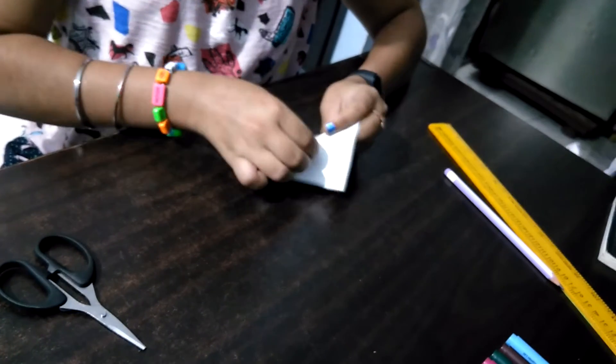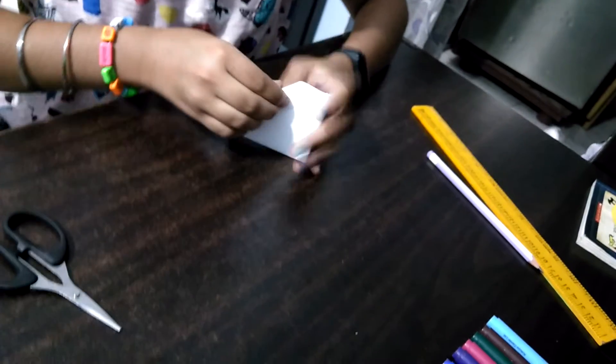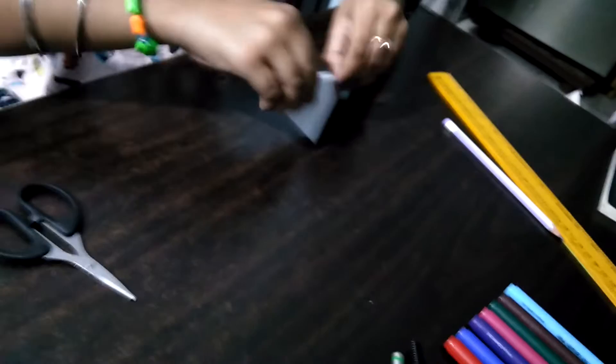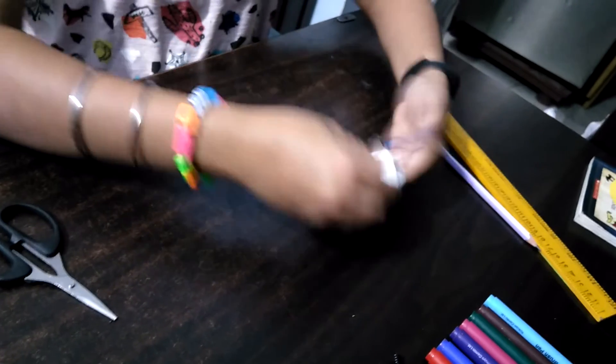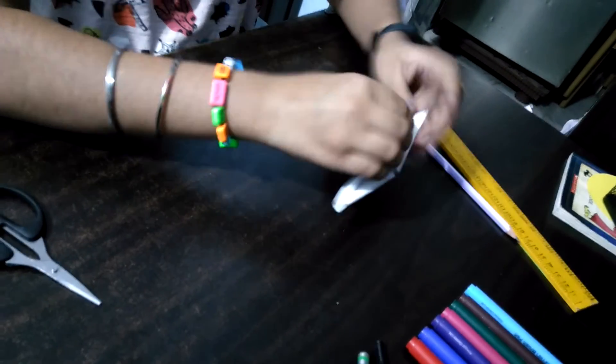And fold it like this. And this is the other side. Now fold it like this, put it over here. Now the base of our bookmark will be ready soon.